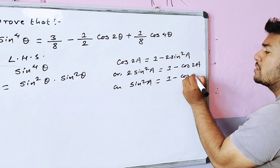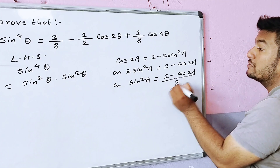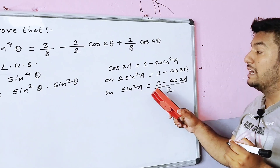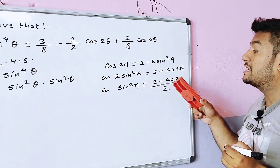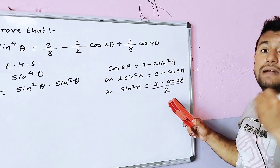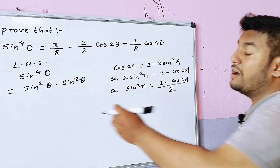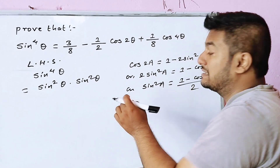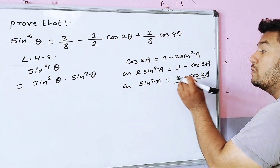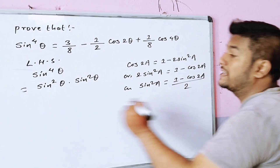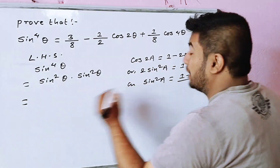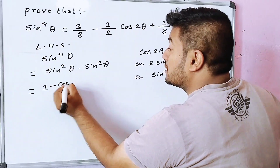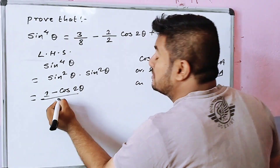1 minus cos 2θ divided by 2. Similarly, sin²a is equal to 1 minus cos 2a divided by 2, and sin²θ is equal to 1 minus cos 2θ divided by 2.